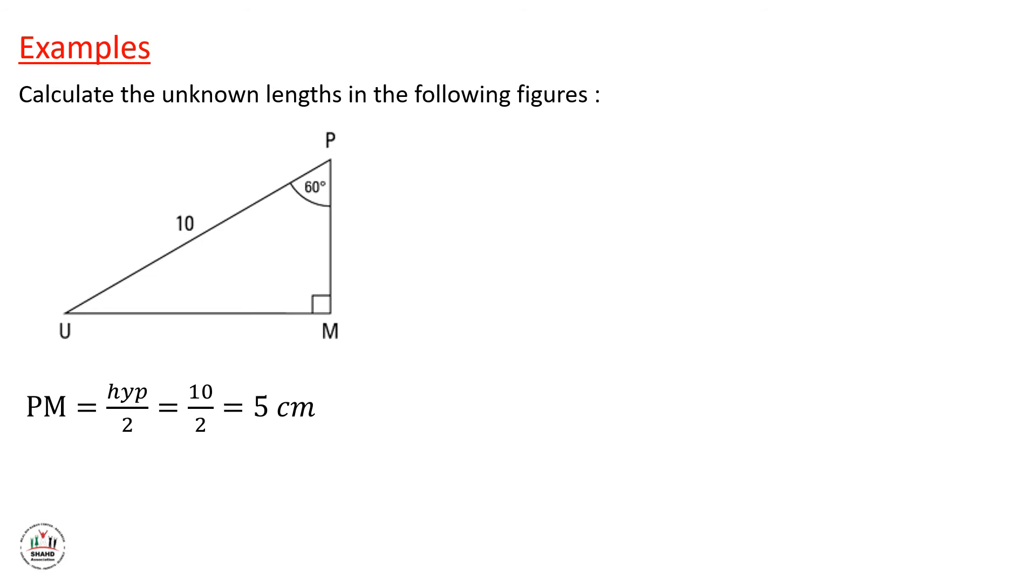So we have PM equal to hypotenuse over 2, 10 over 2 equals 5 centimeters. We have UM equal to the side opposite to 60 degrees. So it equals radical 3 times hypotenuse over 2. We have hypotenuse 10 and the answer will be 5 radical 3 centimeters.